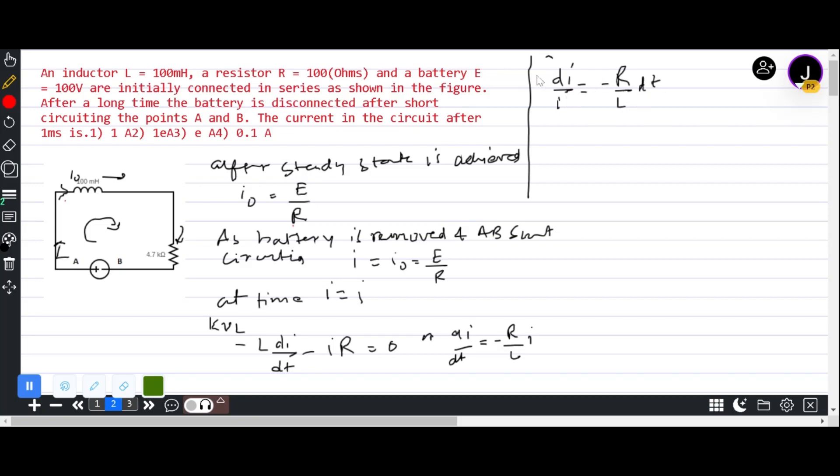Now we integrate both sides. Current goes from i₀ to i, and time goes from 0 to T. So that is log i on one side, and on the other side minus R by L times T.